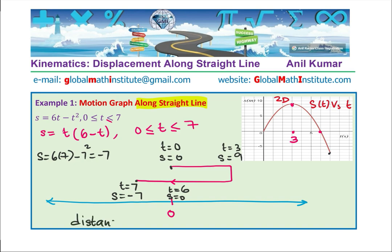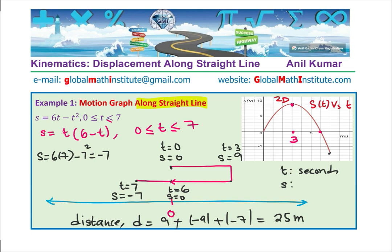Let me show the distance calculation once more. Distance D equals: from 0 to 9 we covered 9 meters, then from 9 back to 0 we add the absolute value of minus 9, giving 18 meters, then we add the absolute value of minus 7 to get 25 meters total. Distances are in meters and time is in seconds.